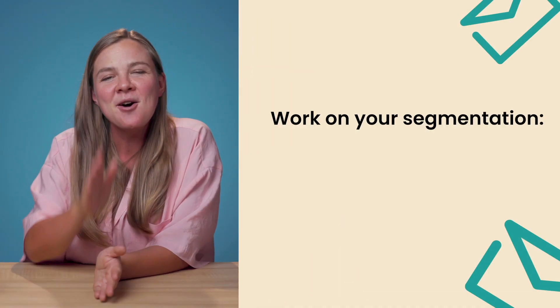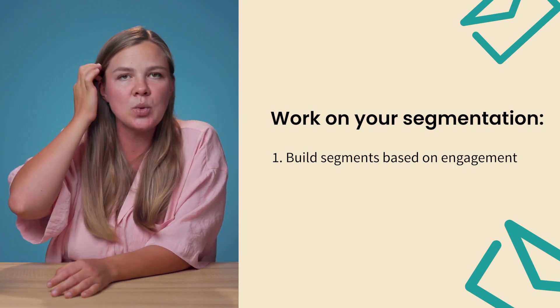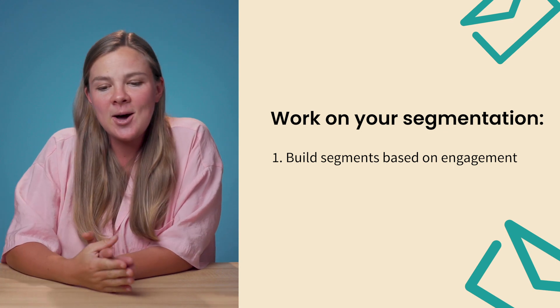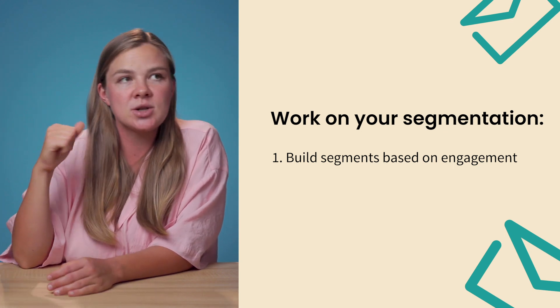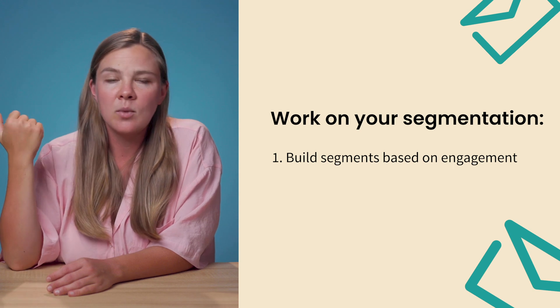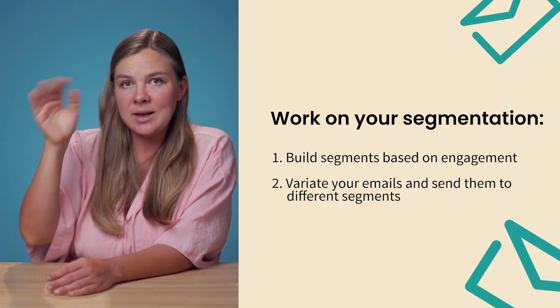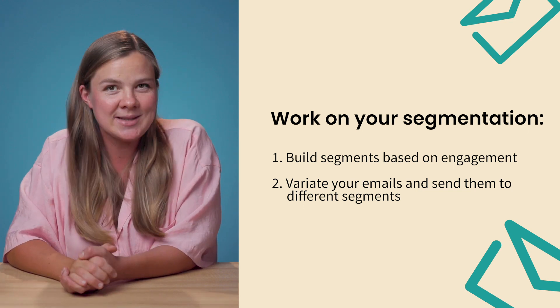A super easy trick to get your open rate really high is to narrow your segment to people who, if they received five emails in the last 30 days, opened three or more or clicked two or more. Your segment will be much smaller but super engaged, and your open rate can hit 70 percent. Work on your segmentation — if you've been sending to your whole list, stop. Build segments based on engagement: 30 days, 90 days, 180 days, defined by opens, clicks, website visits, and vary who you send to over time.